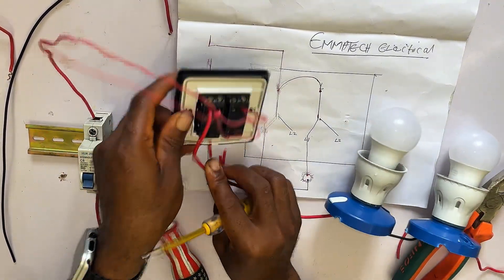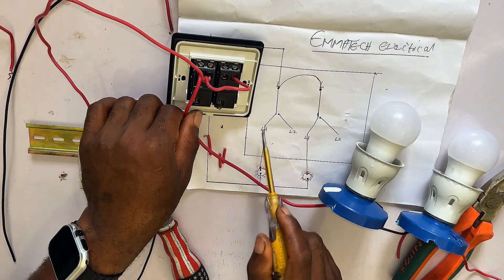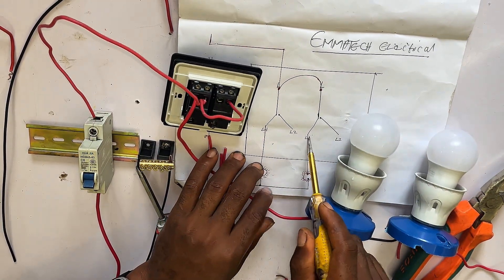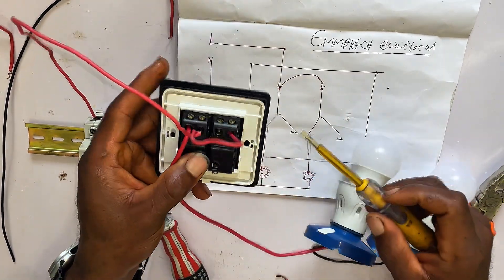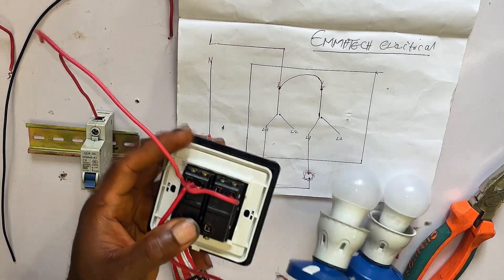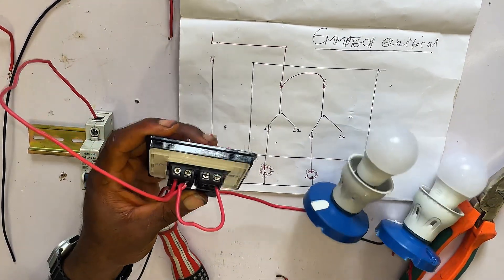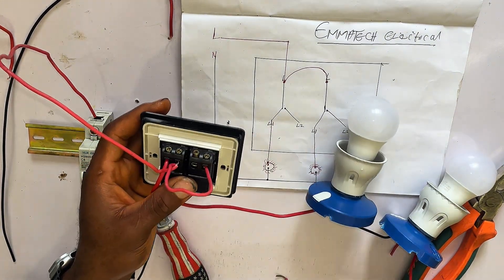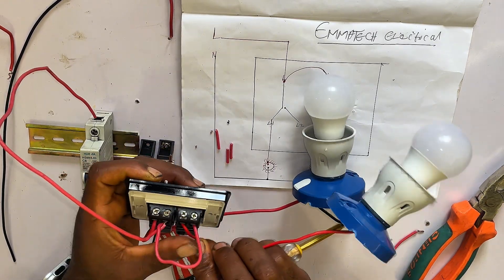Our first bulb is connected to L1 of the first gang. Then our second bulb connects to L1 of the second gang. You can see here is L1 of the second gang — take our bulb wire this way and connect it there. So the second bulb is connected to L1 of the second gang.